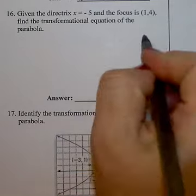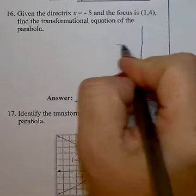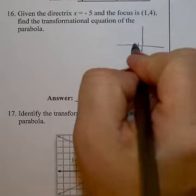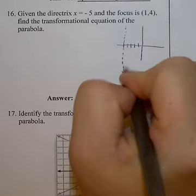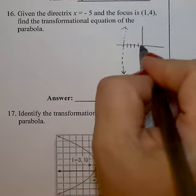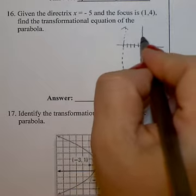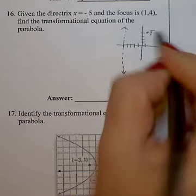Okay, so I like to draw a little bit of a graph here. This helps me out. We have a directrix of x equals negative 5. That means it goes through the x-axis at negative 5. And we have a focus of positive 1, 4. Here's the focus and here's the directrix.